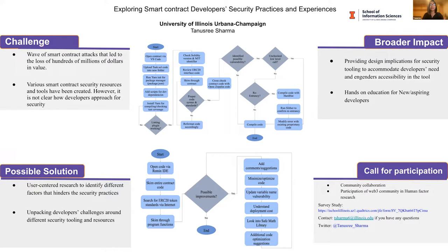To start with the challenges — security is a fundamental concern for smart contracts, and it's not very clear how smart contract developers approach security. This might include their security perception, or practices including different tools and resources that they use, and even in some aspects, the company culture as well. In many cases, developers may use security tools but still fail to identify security issues, leading to the attacks we often see in news reports.